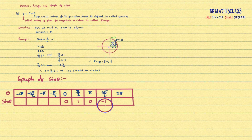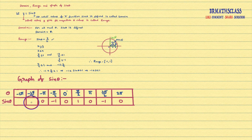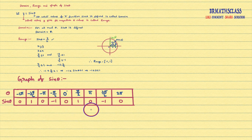I have done the proofs for why sin pi by 2 is 1 and sin 3 pi by 2 is minus 1 in other videos. We know that sin of minus theta is minus sin theta. So sin of minus pi by 2 is minus 1, sin of minus pi is 0, sin of minus 3 pi by 2 is 1, and sin of minus 2 pi is 0.